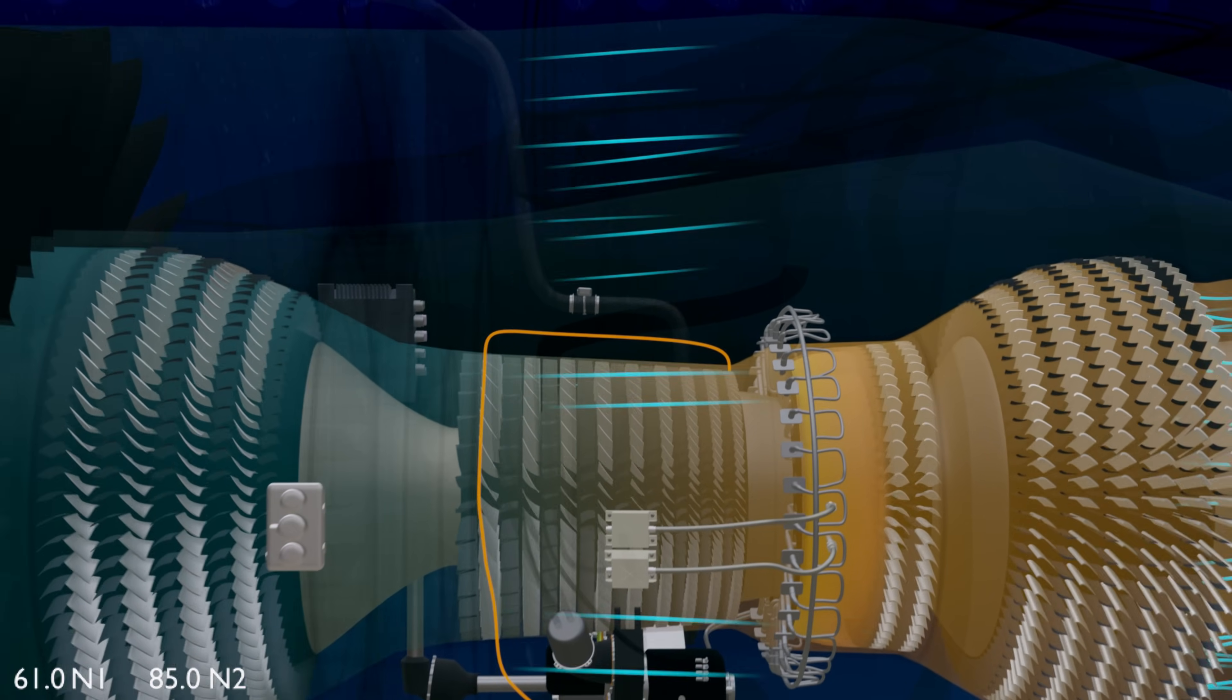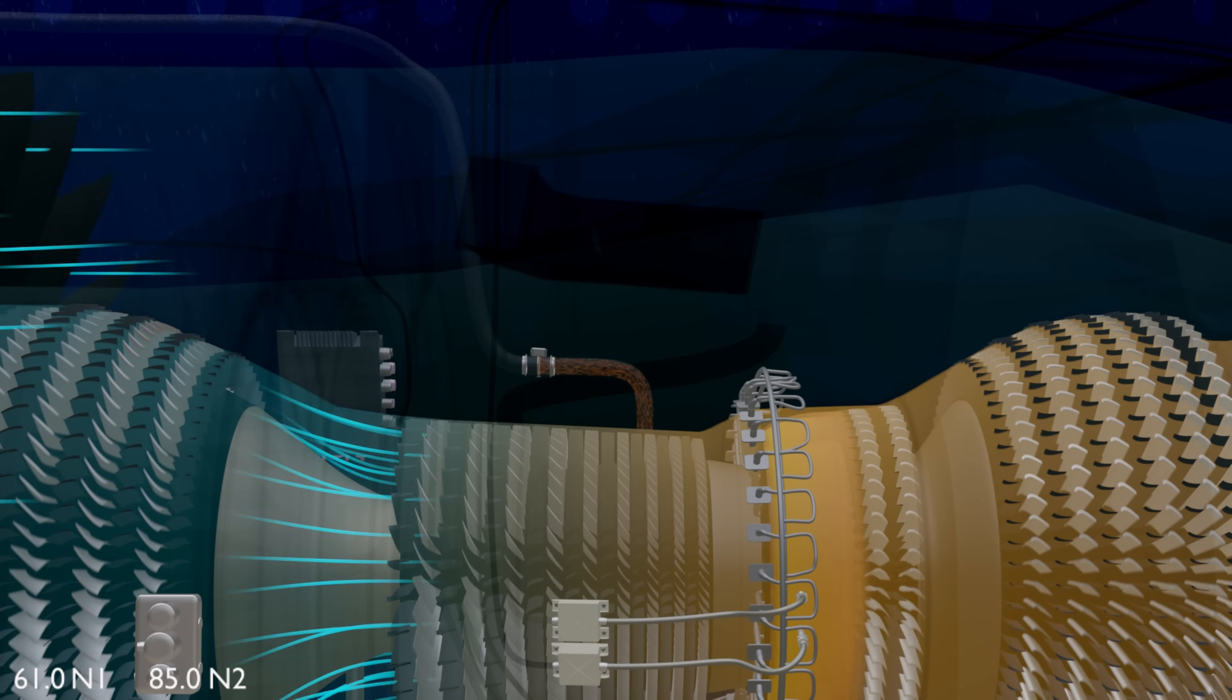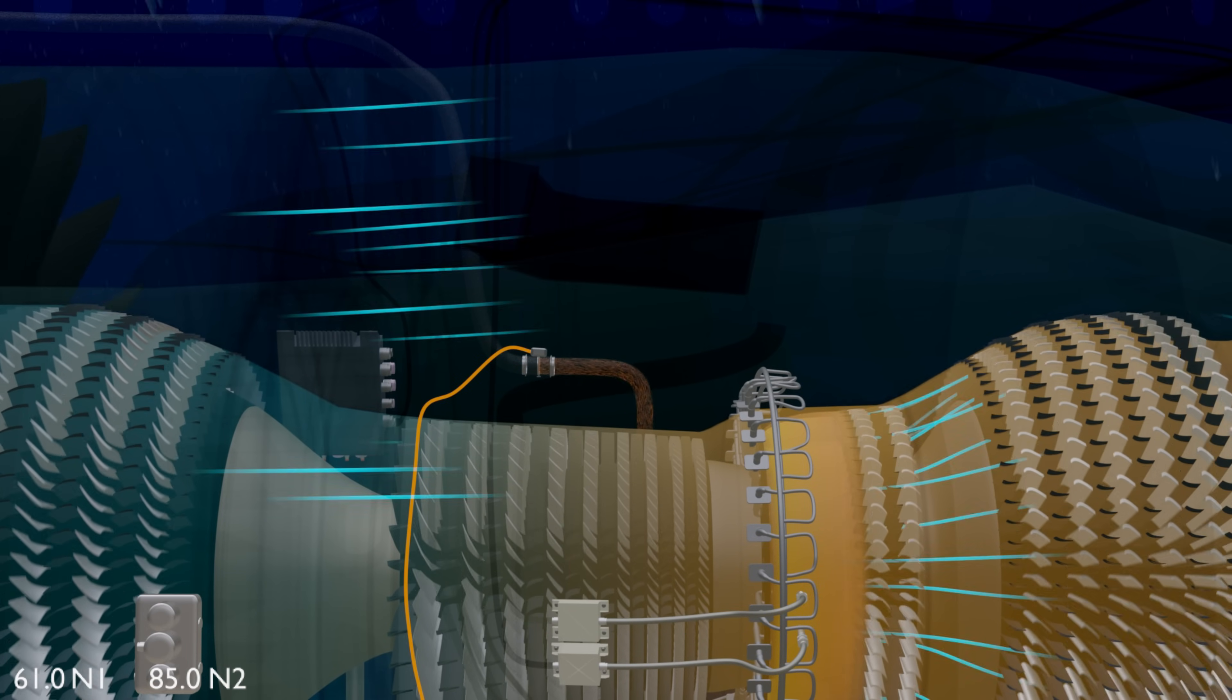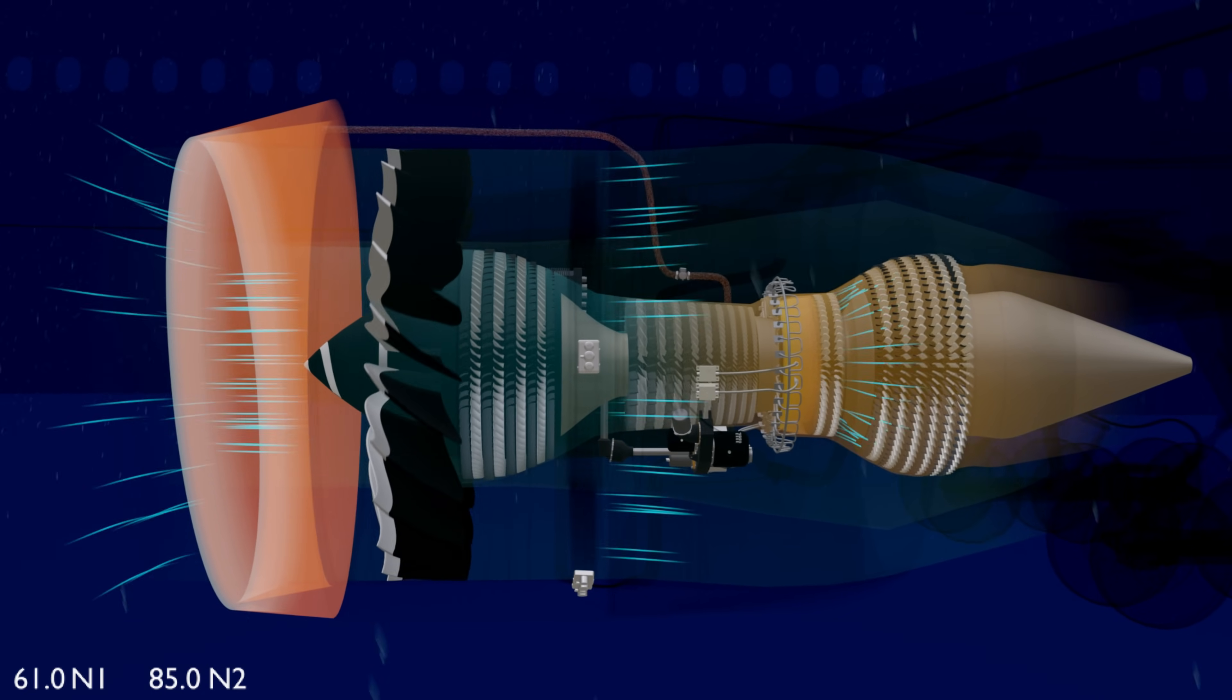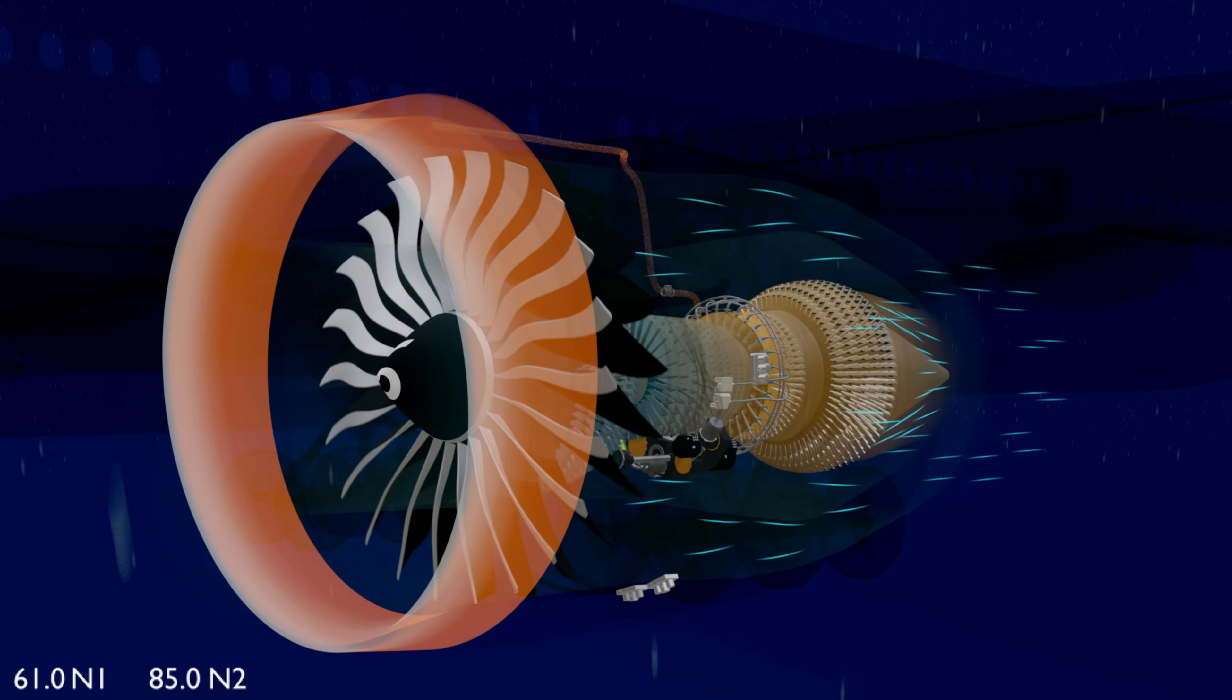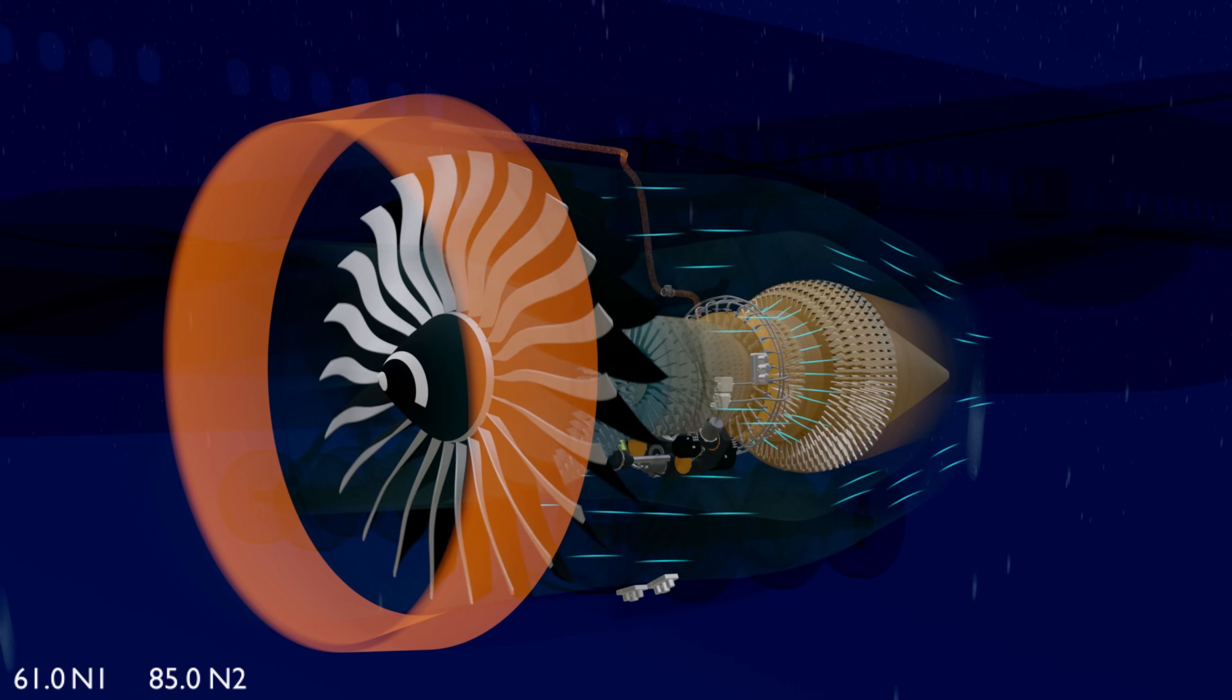The controller takes the pneumatic pressure from the compressor stage and uses it to open the engine anti-ice valve. The bleed air from the 7th stage of the high pressure compressor travels to the inlet cowl of the engine. Hot air circulation to the leading edge prevents any possible ice formation.